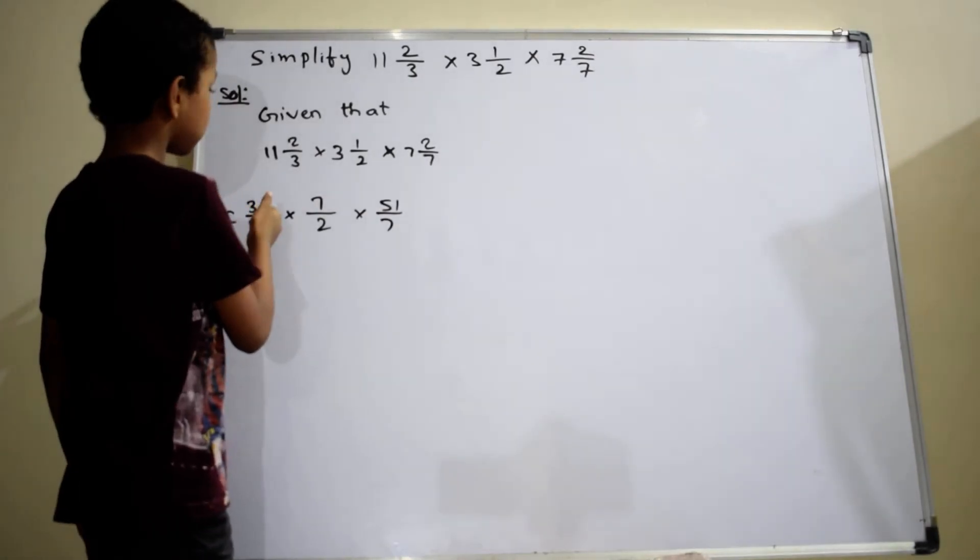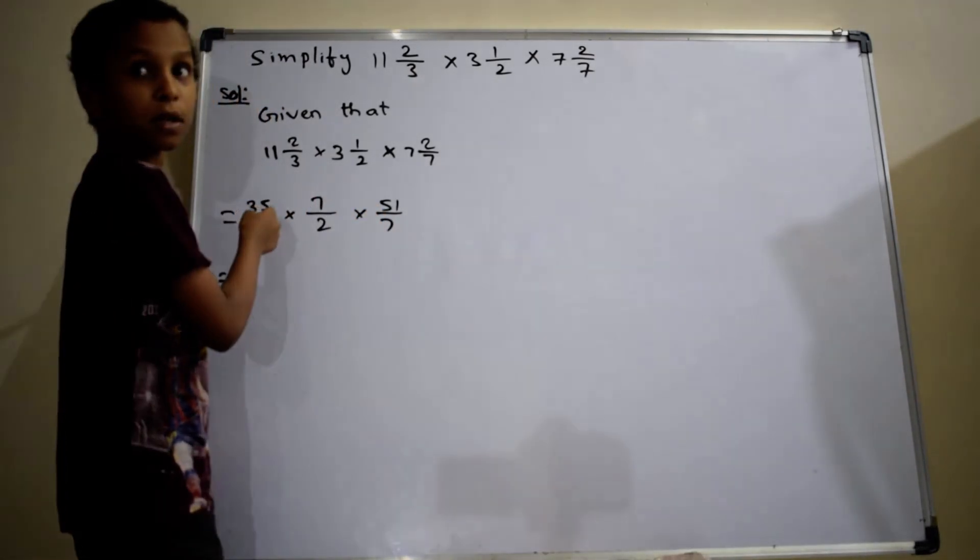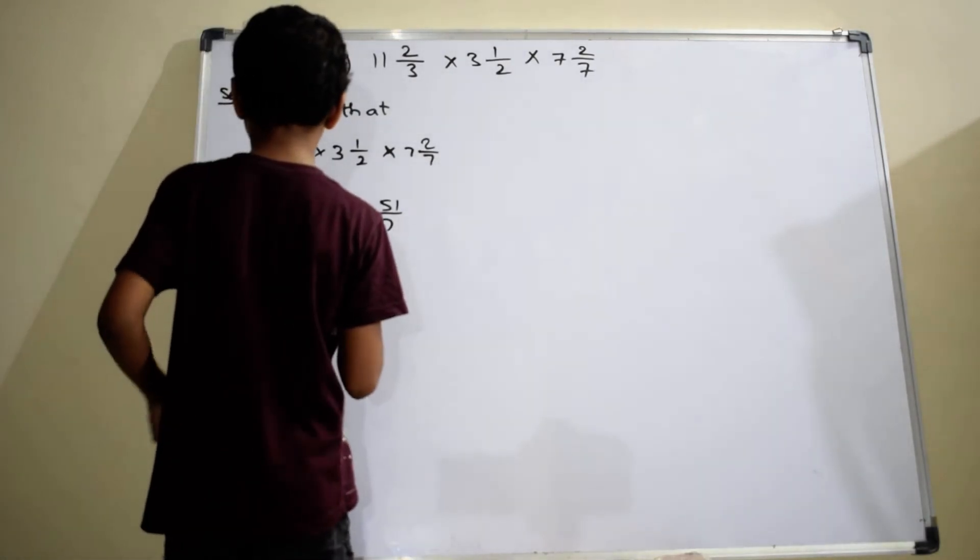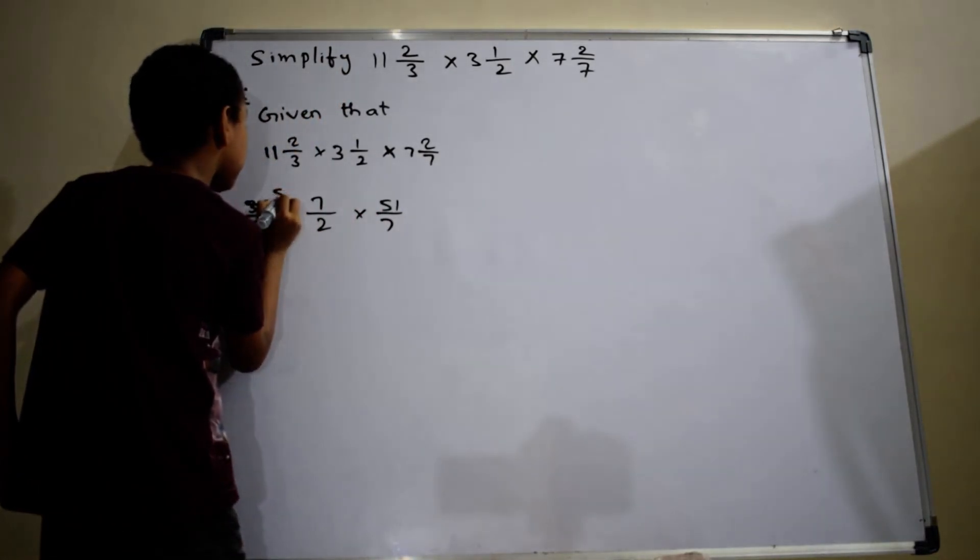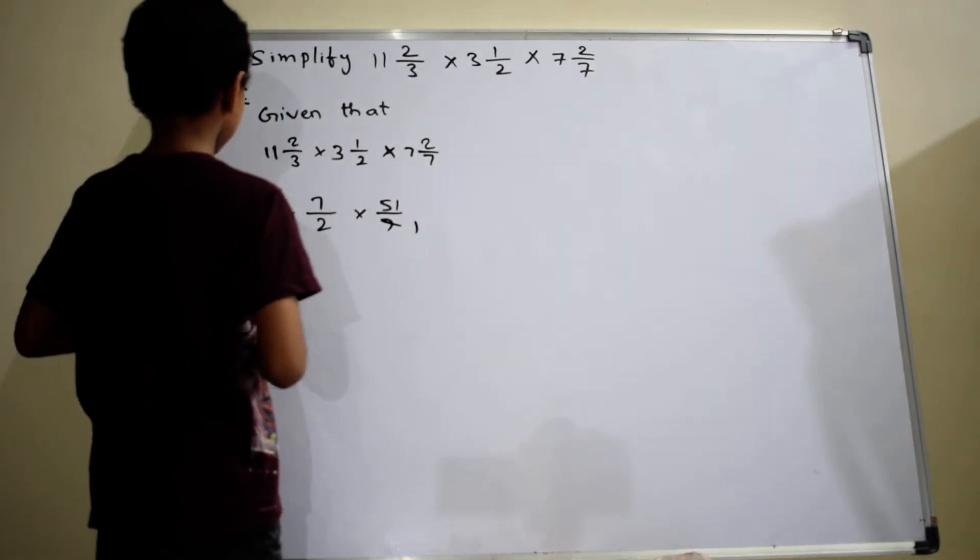So, we have to cancel 7, 5 times in 35, which is equal to 5, 1. Here,